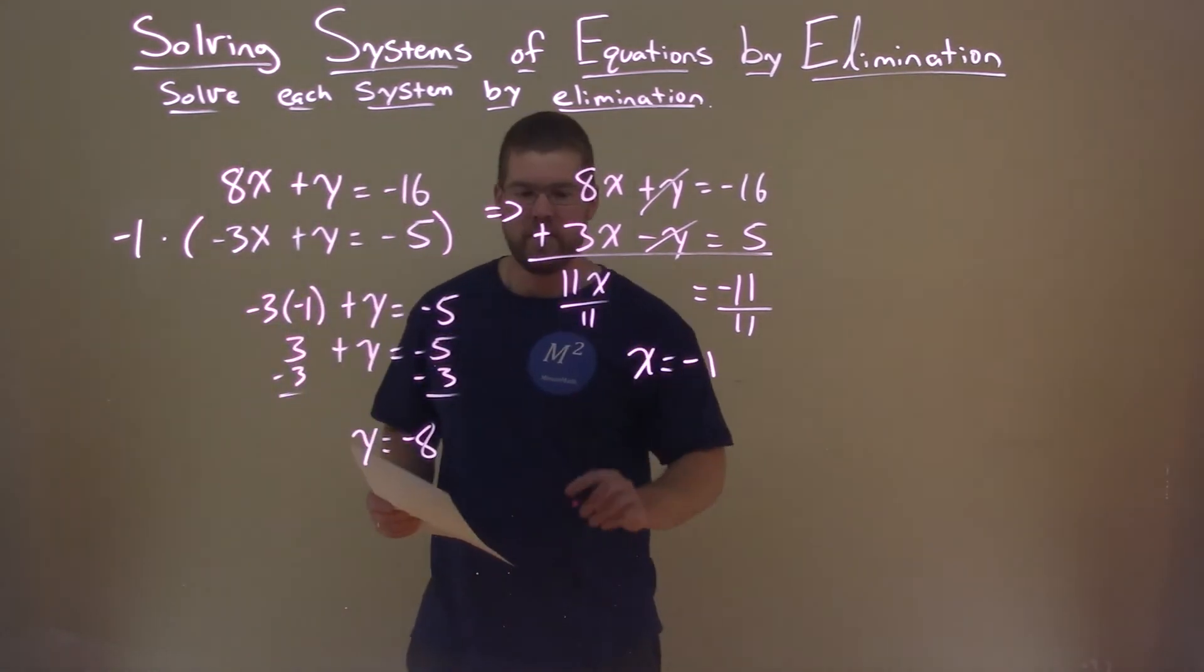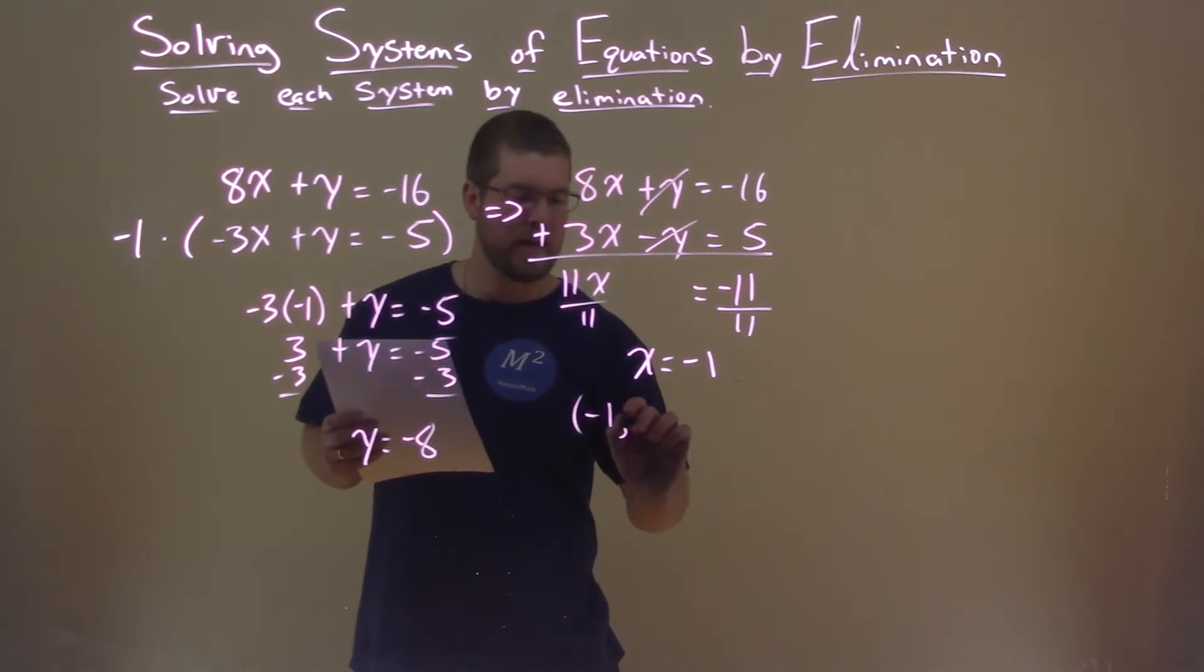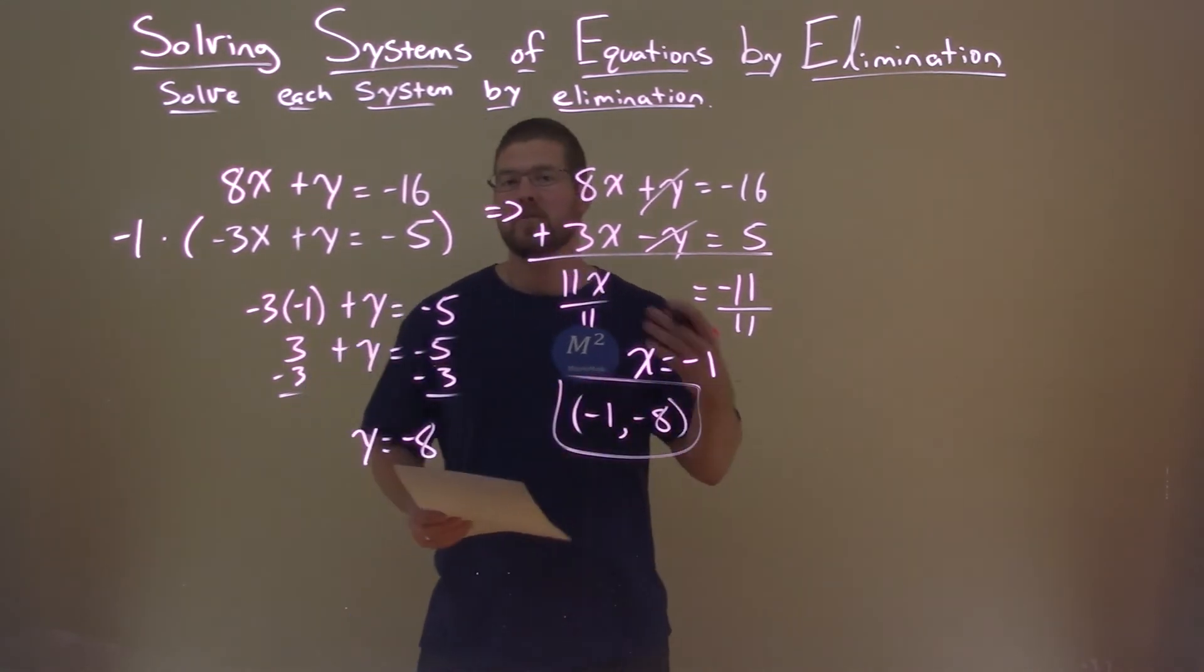And we have our x and y value here. We can write that as a coordinate point, as negative 1 comma negative 8, and there is our solution.